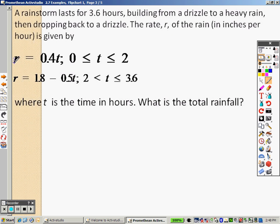The rate is given by these formulas. Okay, so here we go. Where t is in time, what's the total rainfall? Basically it's saying 3.6 hours, it's saying how long it went for.